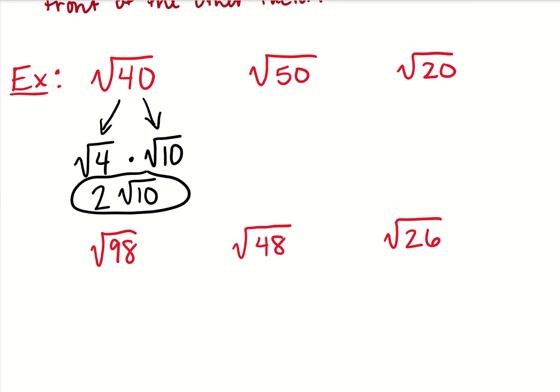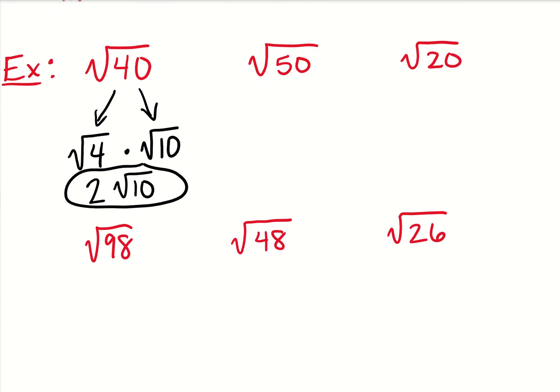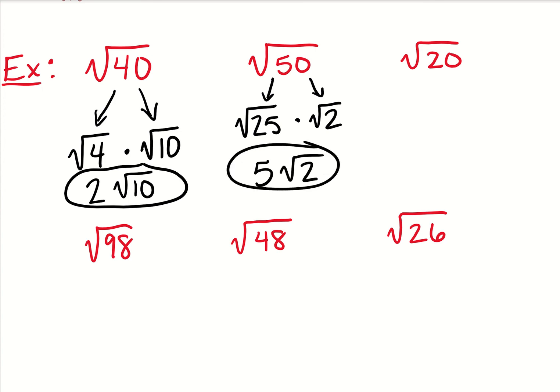I'm going to look at the second one because it's a great example of when step one works. If I divide by two, I get the square root of two times the square root of 25. The square root of 25 is a perfect square, so I have the square root of 25 times the square root of two, because 25 times two is 50. The square root of 25 is five, and then I write down my other factor right next to it — so I get five square roots of two.